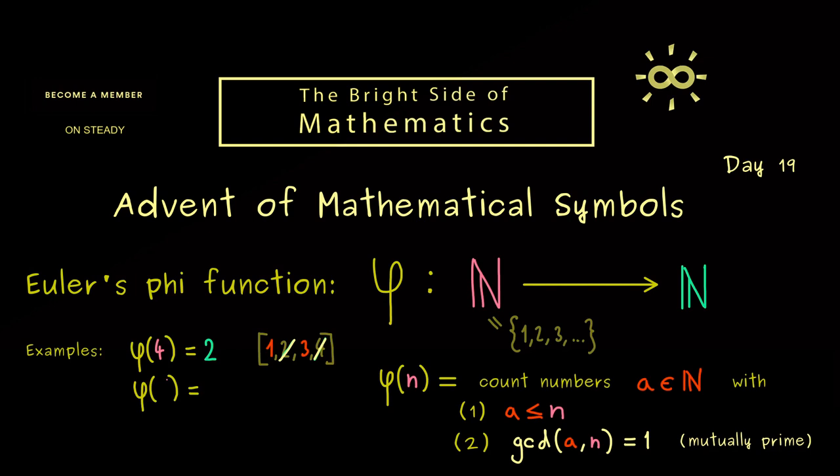So maybe let's look at another example. So let's choose 5. Now we can look at the list again, but maybe you already know that 5 is a prime number. Hence, the only number in the list we can cancel would be 5. Therefore, finally we count 4 numbers.